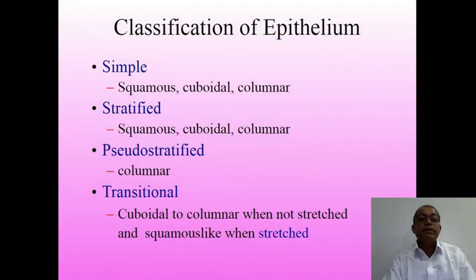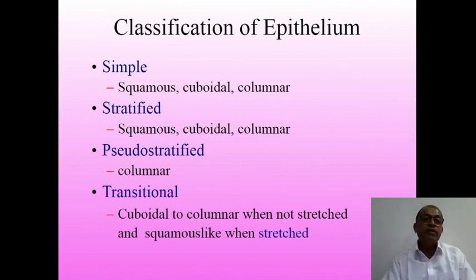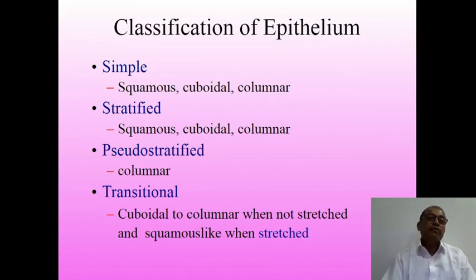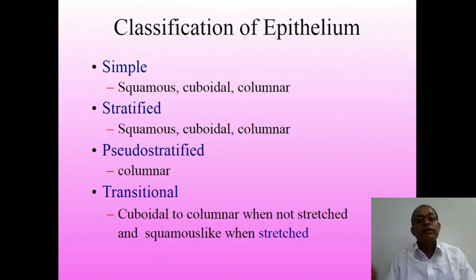Classification of epithelium is important — this is a review topic at T.Y. level, paper number 2. It includes simple epithelium: squamous epithelium, cuboidal epithelium, and columnar epithelium. As per the arrangement of cells, these types are common. Cuboidal epithelium cells are cube-like; columnar epithelium cells are column-like; squamous epithelium cells are with flat, distinct boundaries.